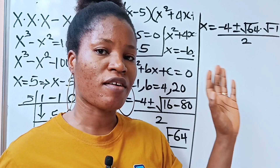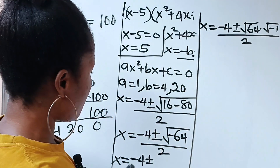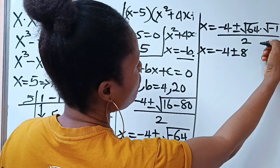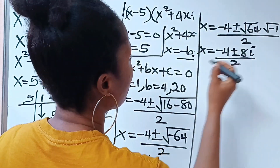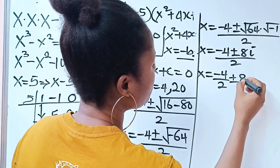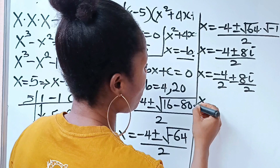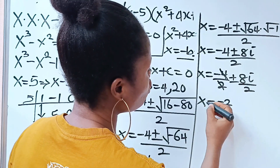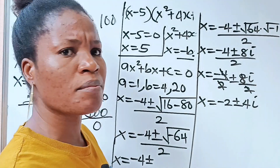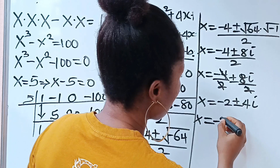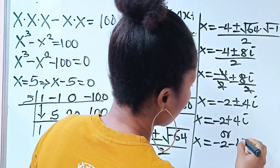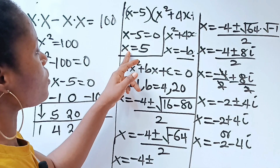So x equals minus 4 plus or minus — the square root of 64 is 8, and the square root of minus 1 is i — all divided by 2. Therefore x equals minus 4 divided by 2, plus or minus 8i divided by 2, which gives us x equals minus 2 plus or minus 4i. So our solutions are x equals minus 2 plus 4i, or x equals minus 2 minus 4i, plus x equals 5.